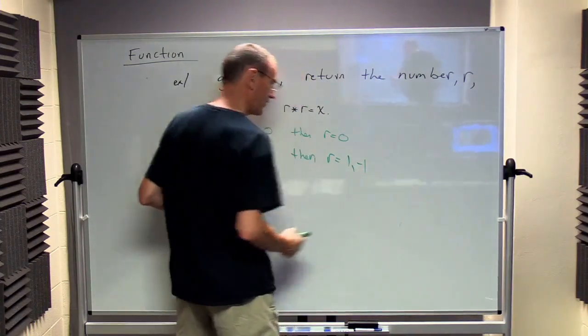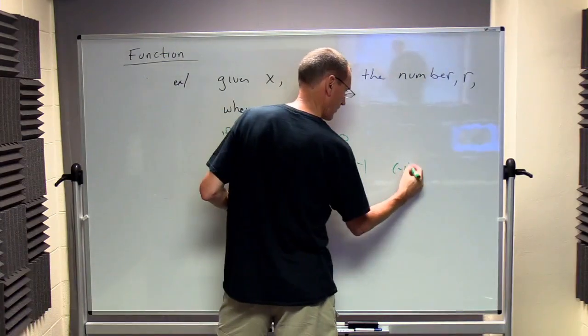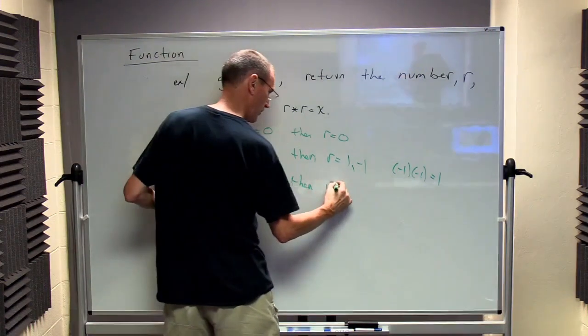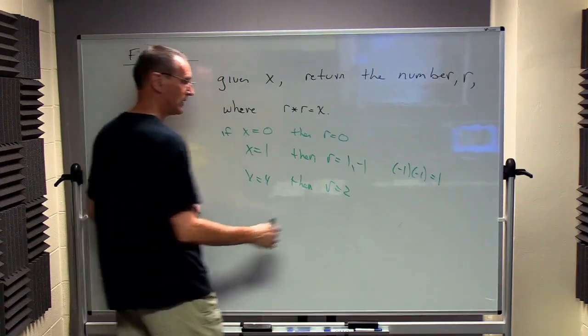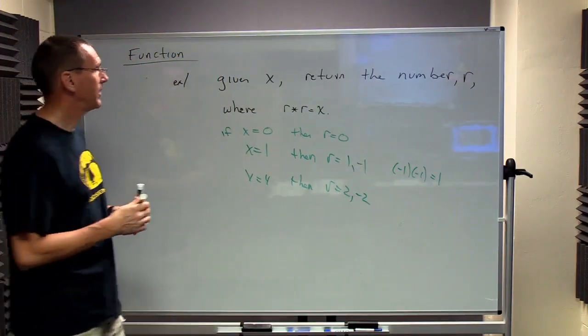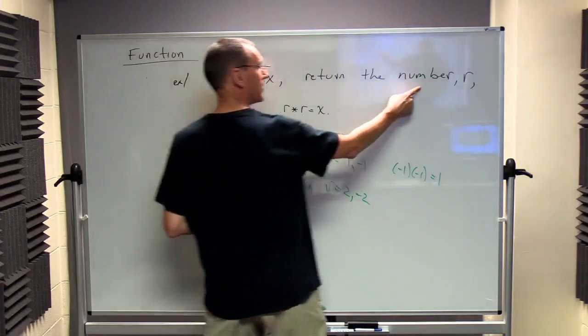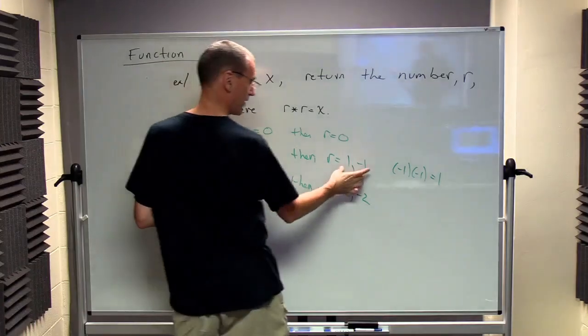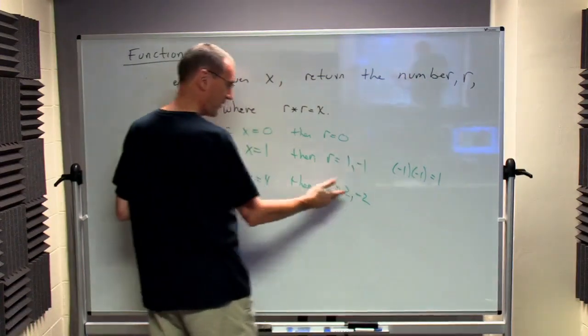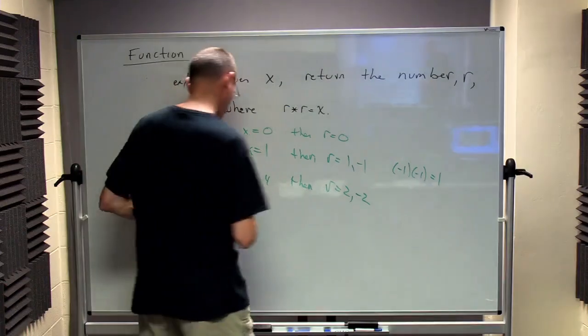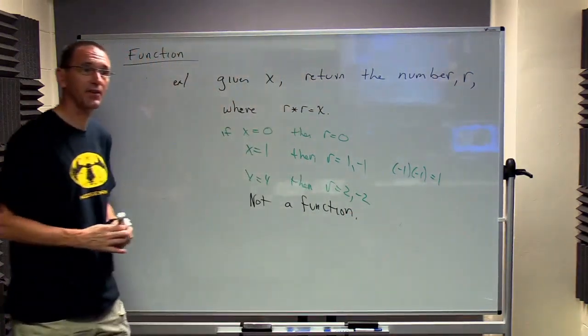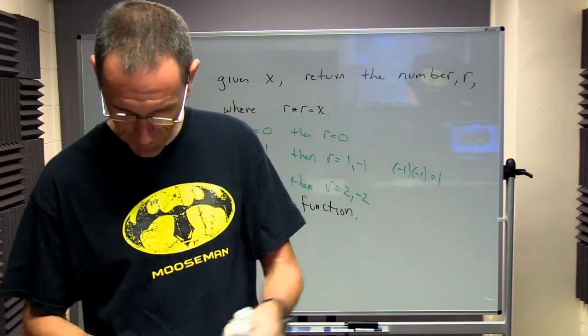But it could also be minus 1, because minus 1 times minus 1 is also equal to 1. If X equals 4, then R is 2. But it's also minus 2, because 2 times 2 is 4. Minus 2 times minus 2 is 4. Now, in this case, when I return a number, I'm not returning a single unique number. I'm returning in some cases, I can find one or two cases where this happens, it blows everything up. And I can find situations where it returns 2. So unfortunately, this does not describe a function. So this is a problem.